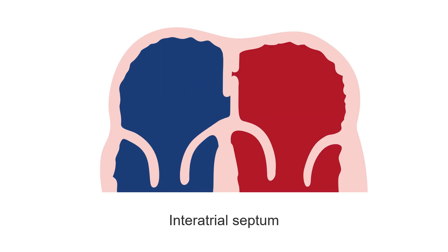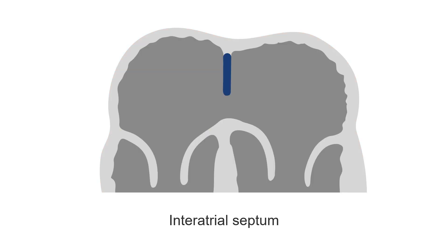The interatrial septum is actually made up of two thinner membranes: the septum secundum, on the right atrial side (shown here in blue), and the septum primum, on the left atrial side (shown here in red). You will notice they are both incomplete and each has a hole. But these holes are offset and covered by the opposing septum, together creating a continuous wall.